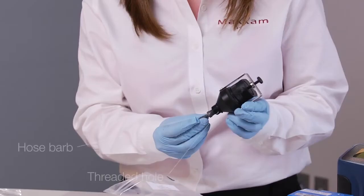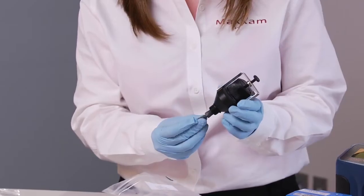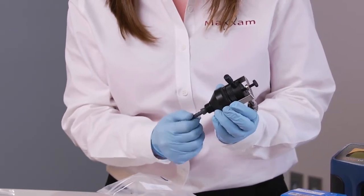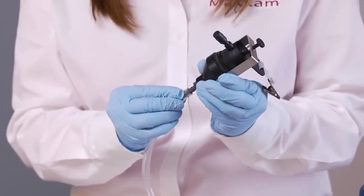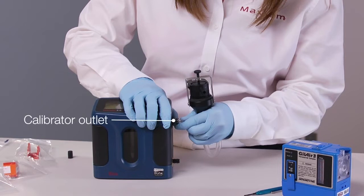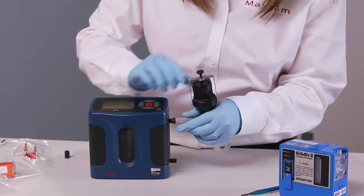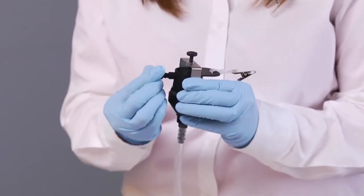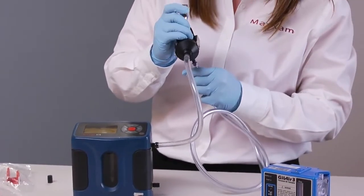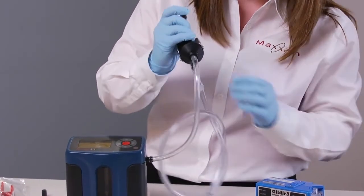Next, screw the hose barb into the threaded hole on the adapter and connect the barb to the calibrator outlet with a piece of flexible tubing. Remove the dust cap from the sampler outlet. Connect the sampler outlet to the sampling pump and calibrator.